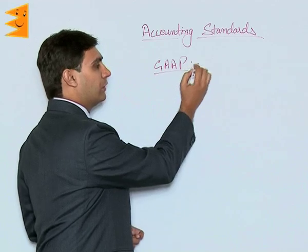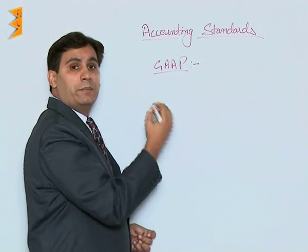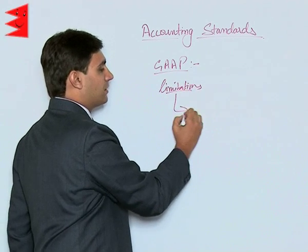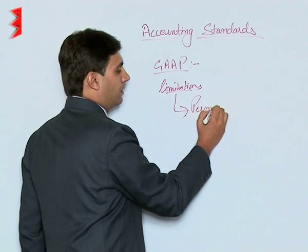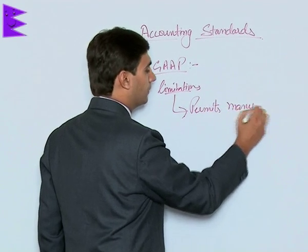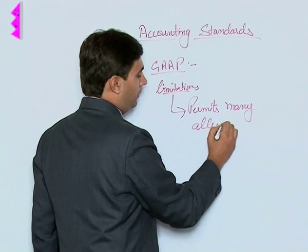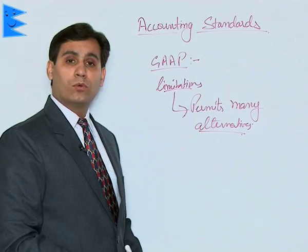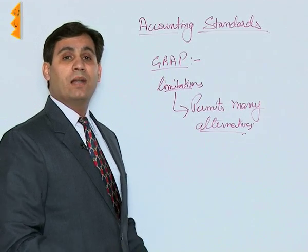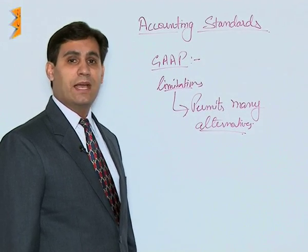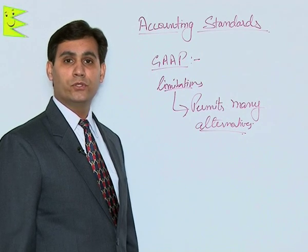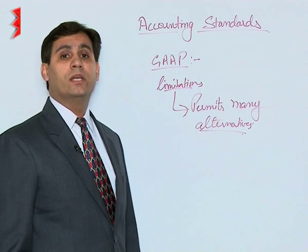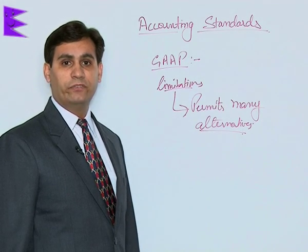But what are the limitations of GAAP? The limitation is that it permits many alternatives. GAAP principles tell what is right and what is wrong, and among what is right they have various alternatives. The accountant has discretion to use those alternatives, but this makes it difficult for a user to compare such information.